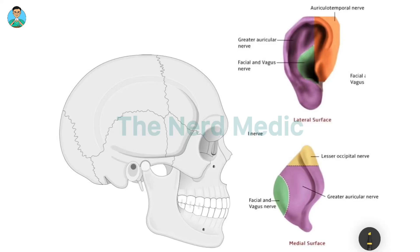Hi, this is Nerd Medic and in this video let us talk about the nerve supply of pinna. Anatomically speaking, the pinna has two surfaces: one is the lateral surface and another one is the medial surface.